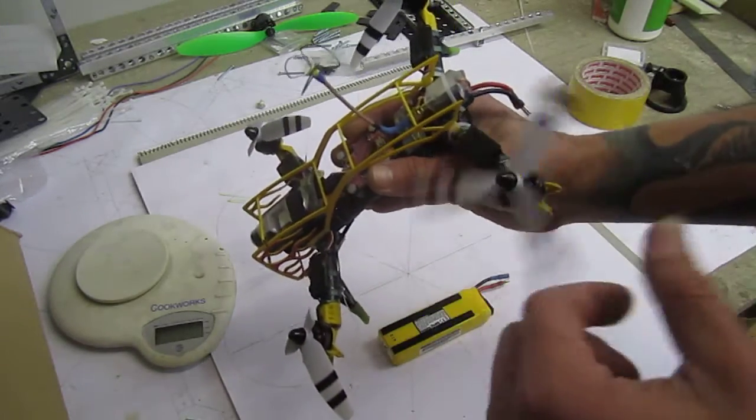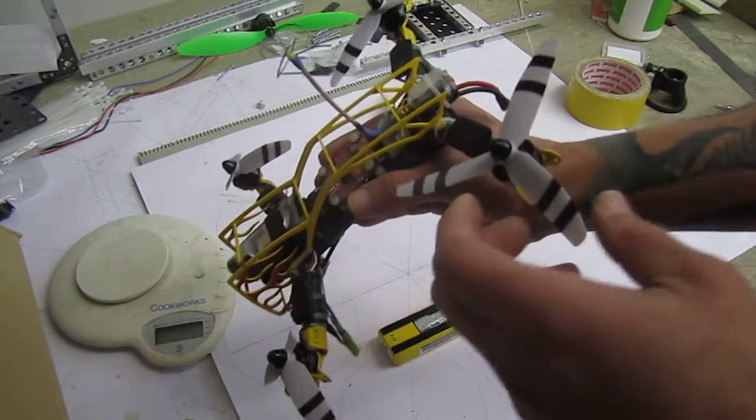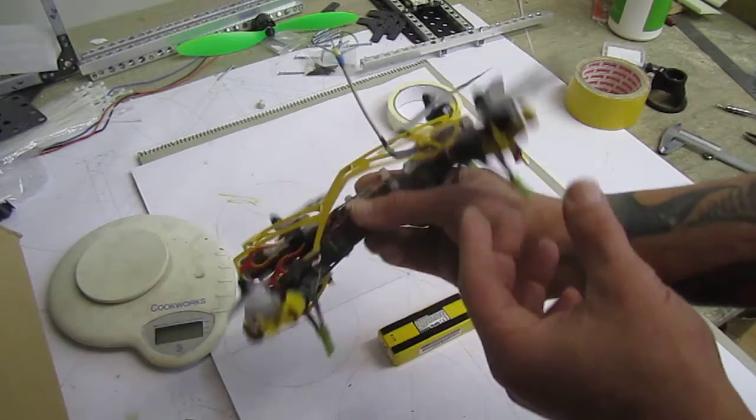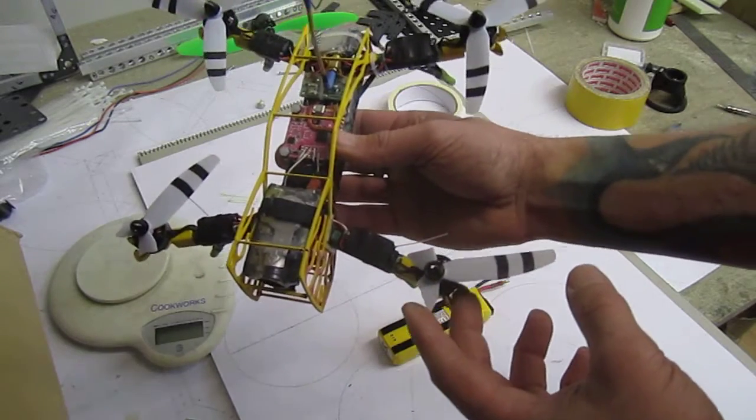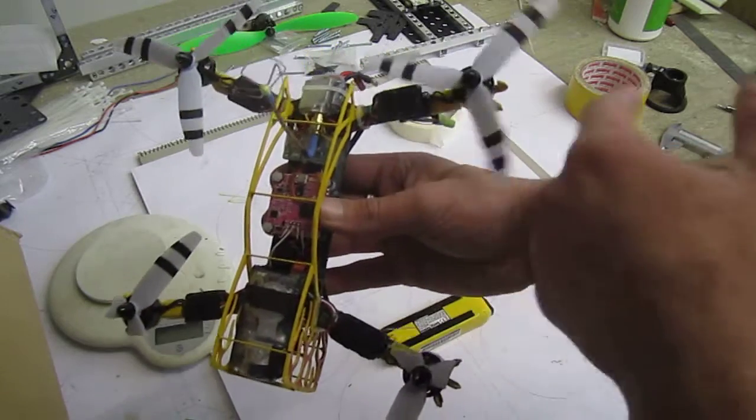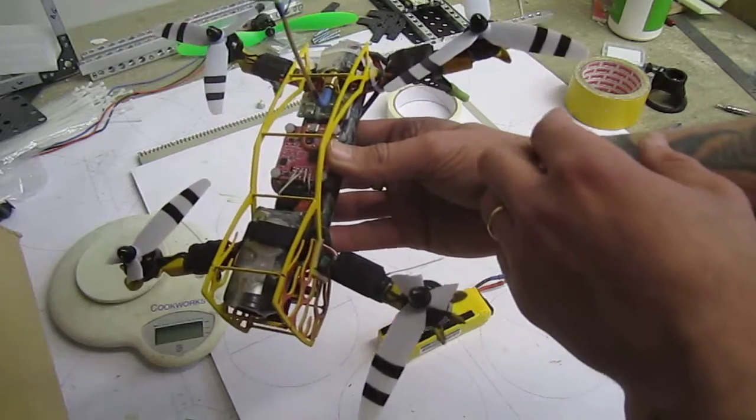Props, forgot to say about the props. These are the GWS 5x3 three-bladed props. You know, there's way enough power with the two-bladed props 5x3, but I like three-bladed props.